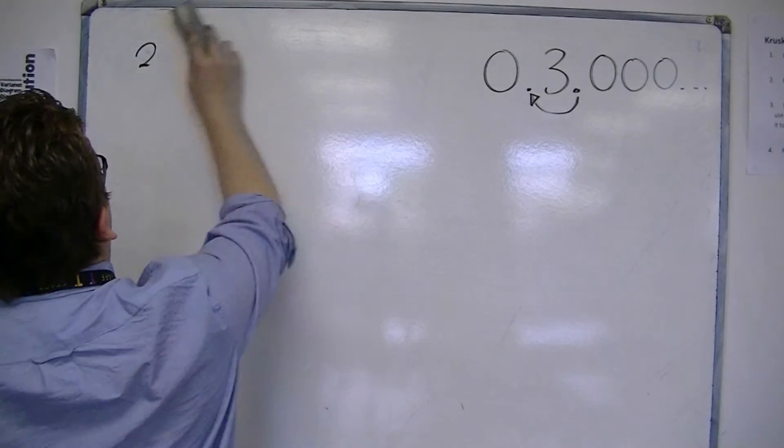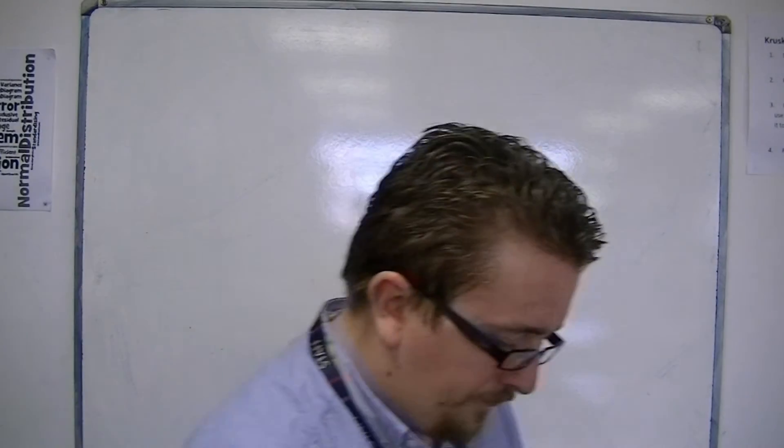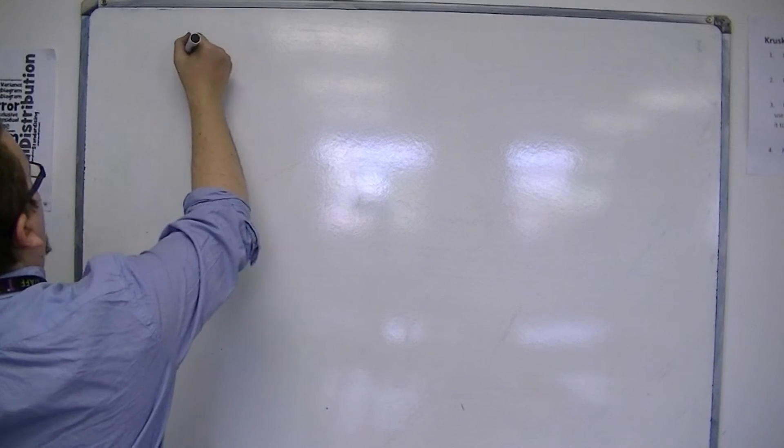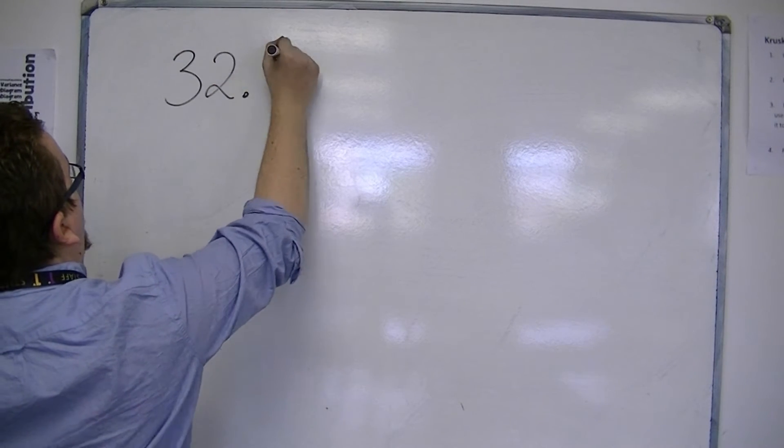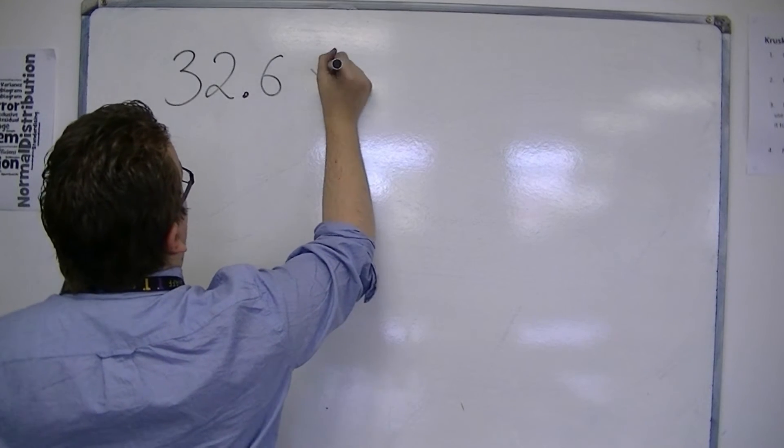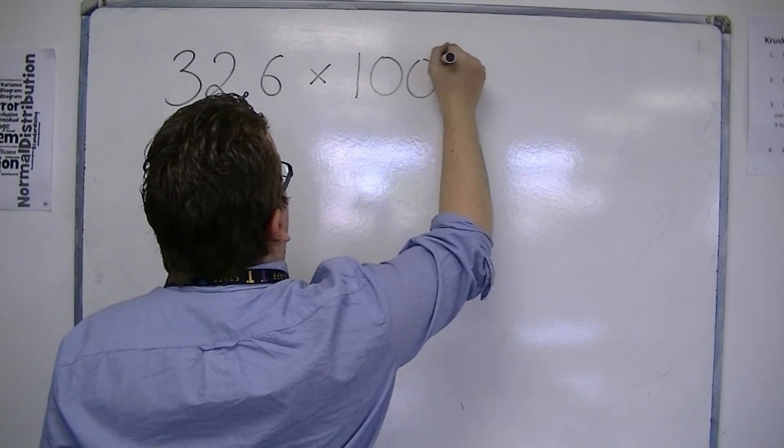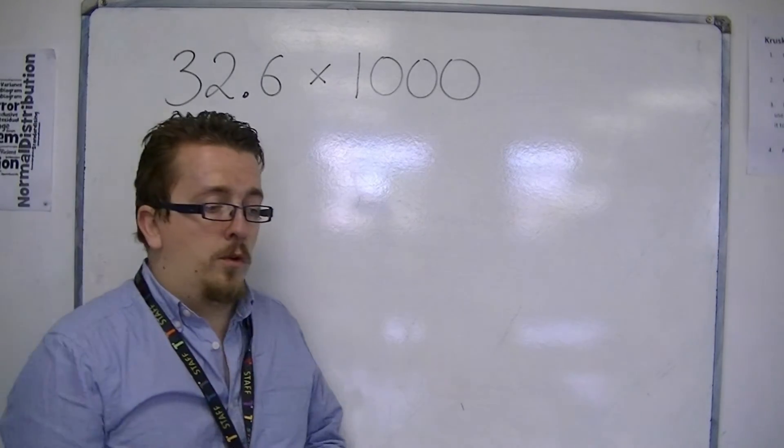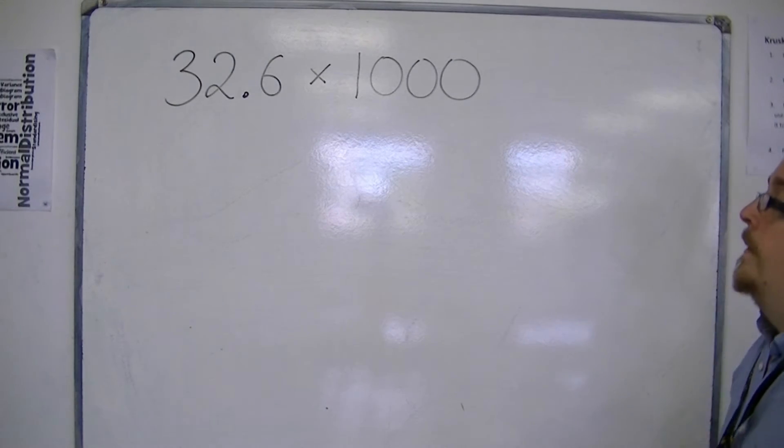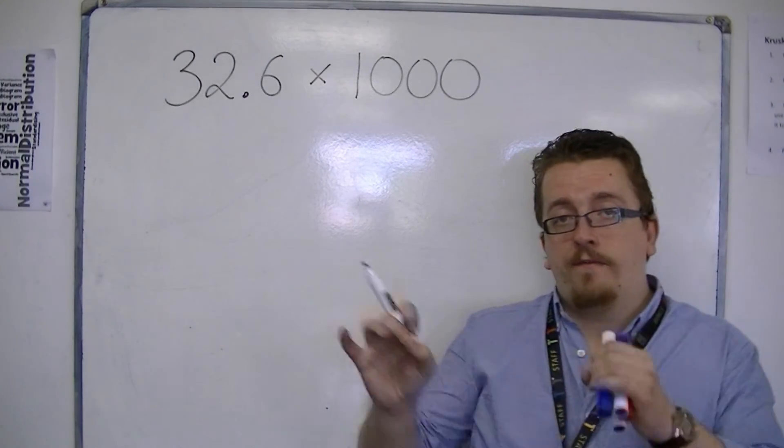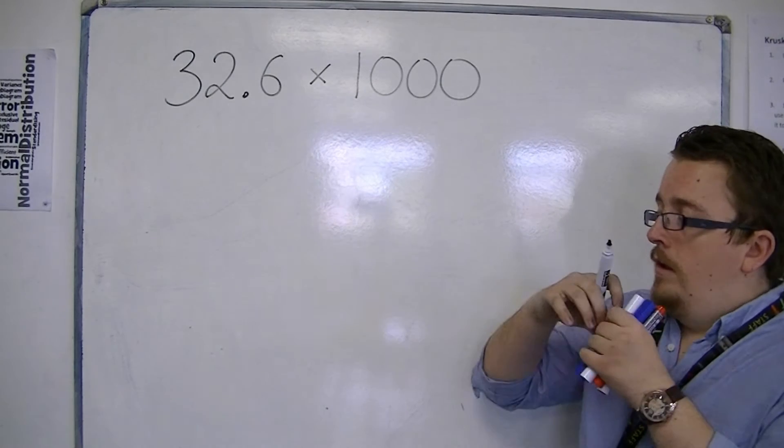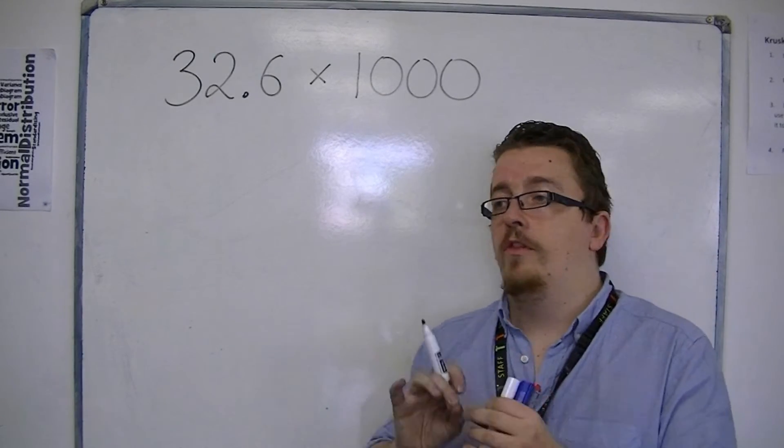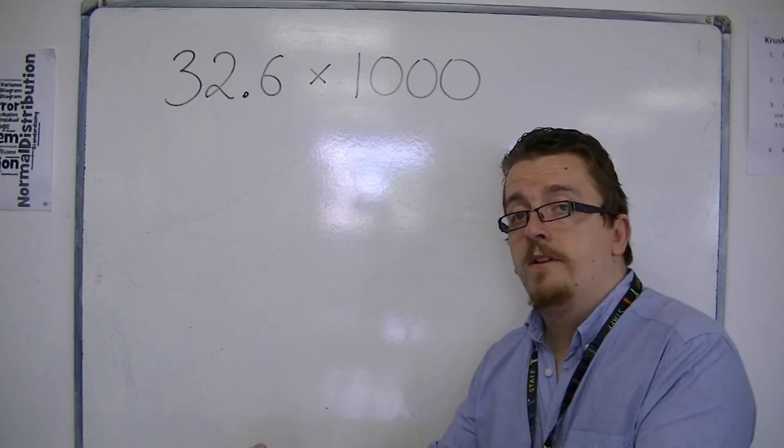So, let's look at a couple more interesting examples. Let's say we're dealing with 32.6, and we want to times this by 1,000. So, first of all, as a reminder, if you have this decimal point involved, then as you multiply by 10, or 100, or 1,000, the decimal point must move to the right.